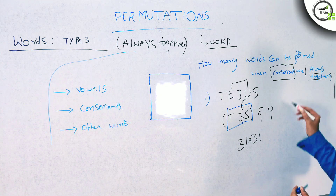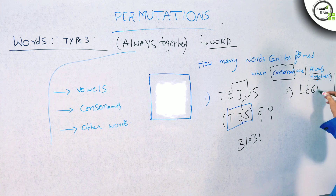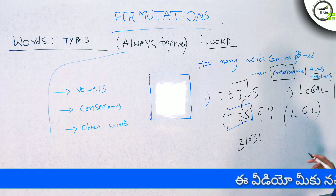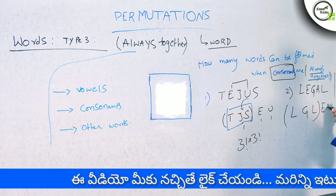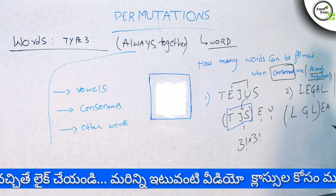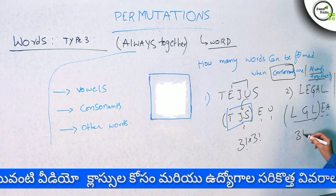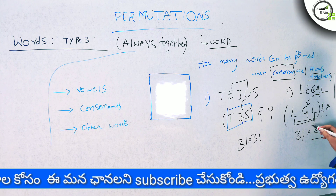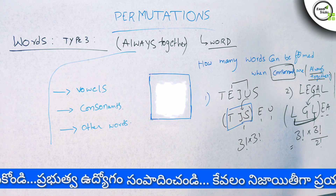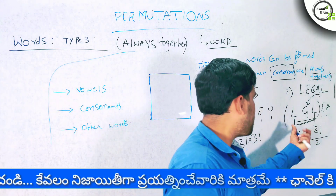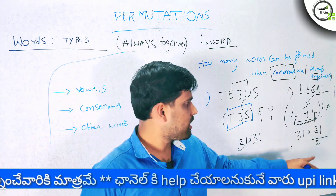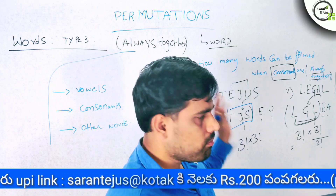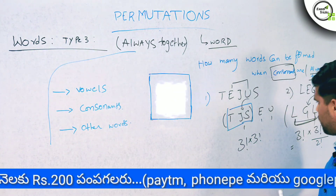Next question: for the word LEGAL. The consonants L, G, L are always together as one group. The vowels are E and A. We arrange the three units in three factorial ways. L is repeated twice, so we divide by 2 factorial in the denominator. We also arrange inside the block. That gives three factorial divided by 2 factorial, into two factorial for the vowel arrangement.